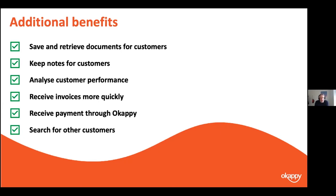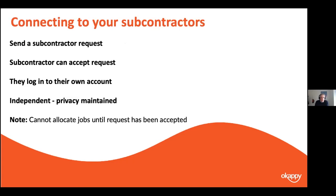You can also search for companies on the Okapi network. If you're looking to grow, you can find new customers and subcontractors and send invites if they're open to connections. On the other side of the coin, you can connect to your subcontractors as well — same principle: click the connections icon towards the top right, enter the subcontractor's details, and send an invite. They'll be notified, and like customers, they can only see the jobs you've assigned to them.